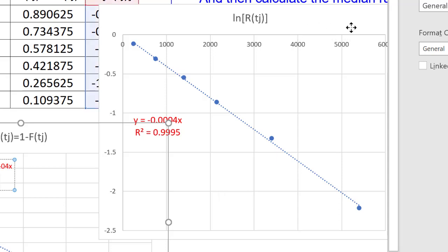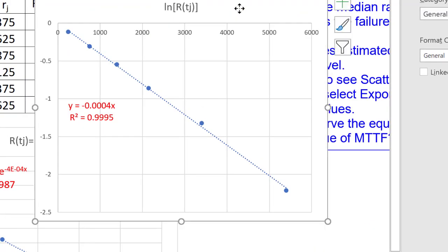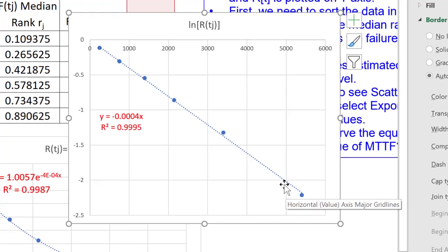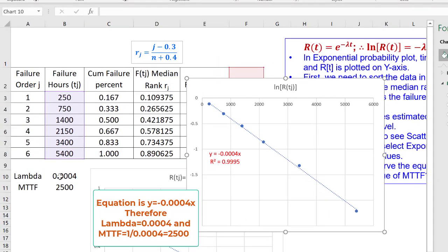So, this is the procedure. And we have plotted this probability plot for the exponential distribution. And we have also estimated the lambda which is 0.0004 and MTTF which is reciprocal of lambda which is 2500.